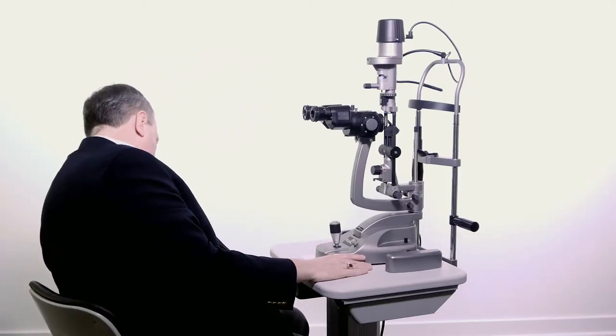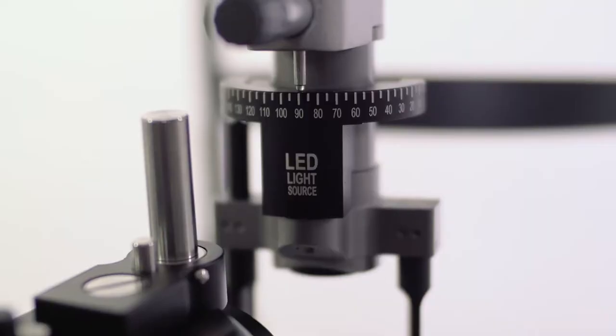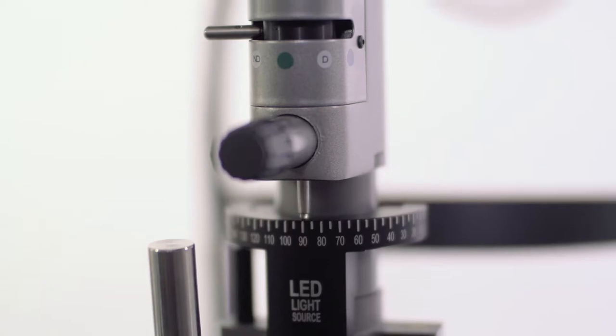Switch on illumination using the main power switch. Adjust illumination using the rheostat near the joystick. The K-Series slit lamp offers LED or halogen illumination.